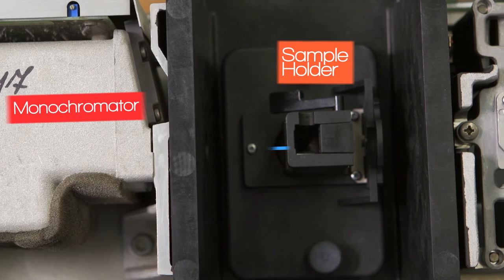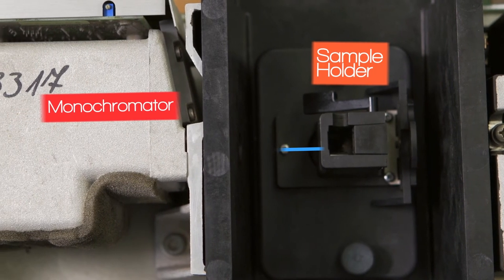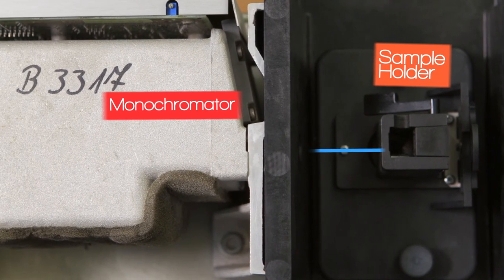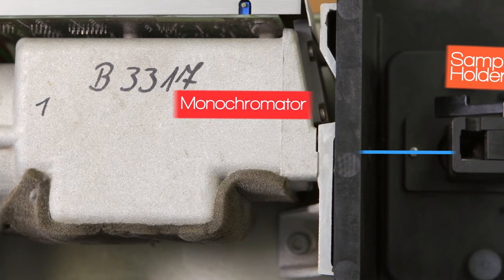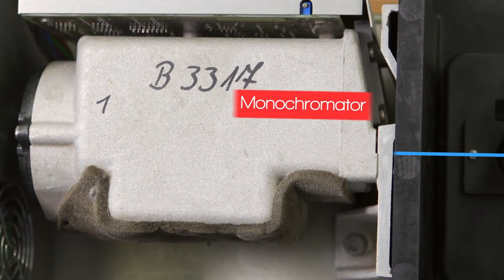Notice that the monochromator comes after the sample holder, rather than before it, like in the previous instrument. This means that the sample is illuminated with white light, rather than a narrow bandwidth.